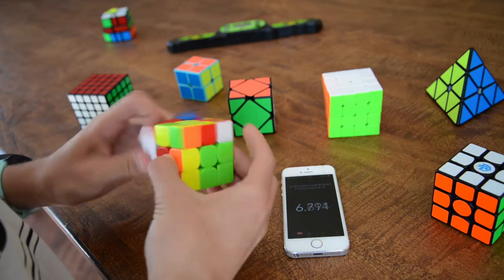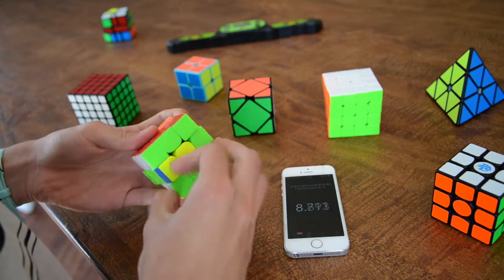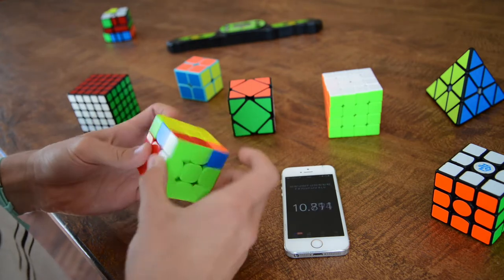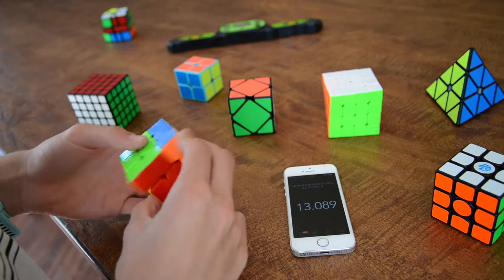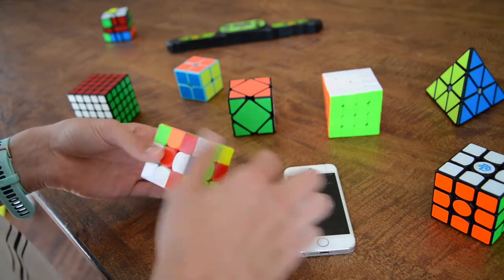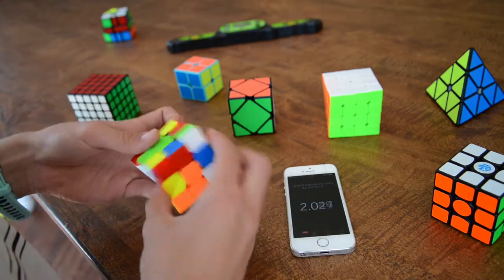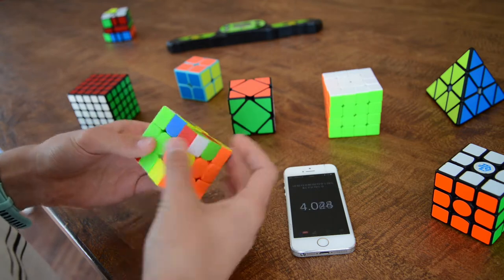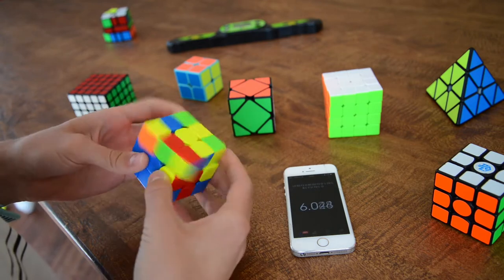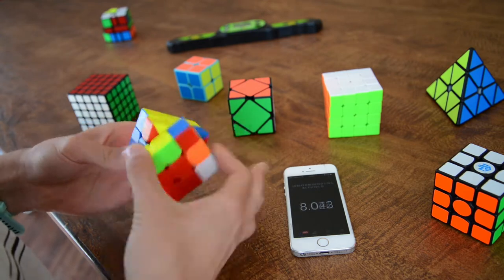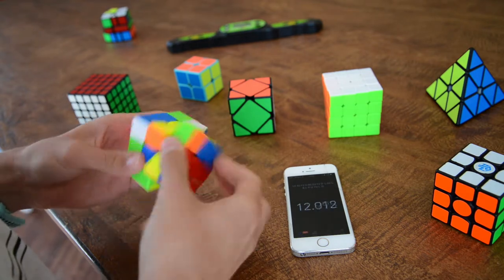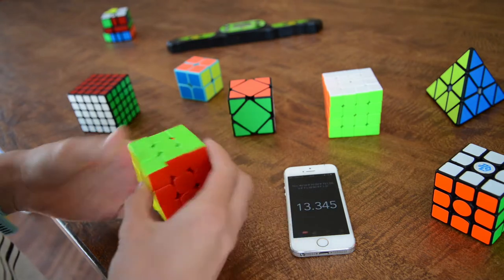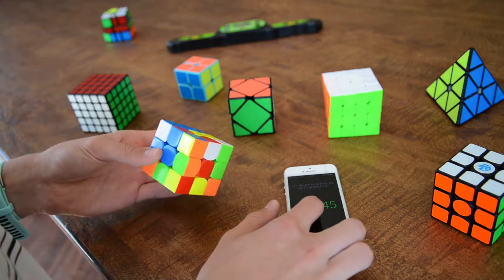Perhaps if there are two comments about pyraminx, then I'll do a pyraminx average of 12 in the next episode. But if there are three comments about three by three, I'm going to still do the three by three average of 12. It works like a voting system, something like that, because that is going to be more interesting and I think more enjoyable to watch every month.